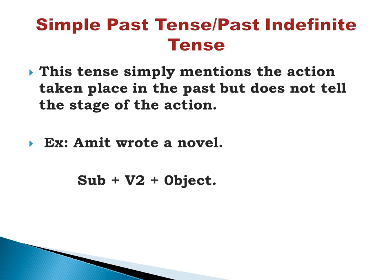Simple past tense, also known as past indefinite tense, simply mentions the action that took place in the past but does not tell us accurately the stage of the action. Example: Amit wrote a novel — we understand what action took place in the past, but we don't know the stage of the action; that's the reason it is called past indefinite. Formula: subject + V2 + object.